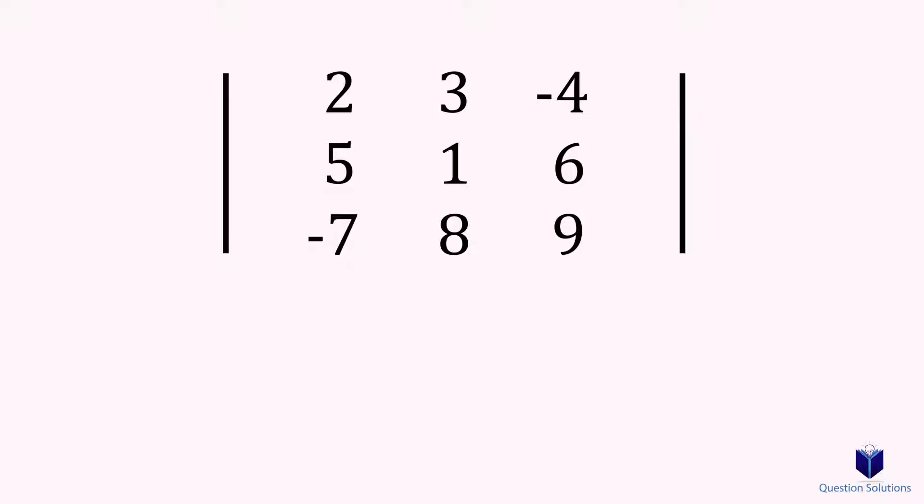The first step is to cover the top row and the very leftmost column. Next, we will write down the intersecting number. In this case, it's 2. You will notice that since we covered the row and column, it leaves a box of numbers available, which are 1, 6, 8, and 9.